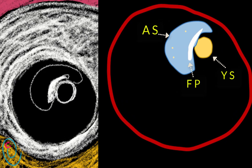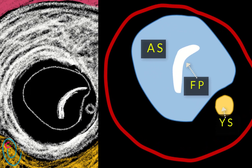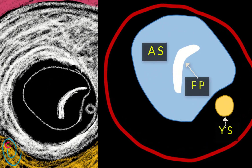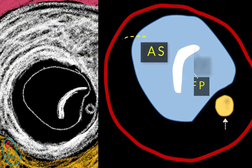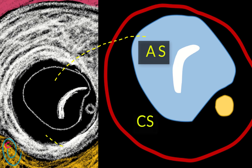But after 10-week gestation, fetal urine production will result in faster growth of the amniotic sac. Consequently, it will occupy an increasing area inside the gestational sac, and two cavities will be visualized inside the gestational sac — the amniotic cavity and the chorionic cavity.